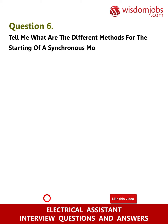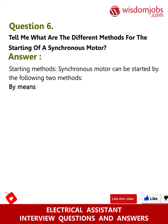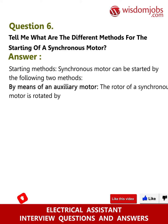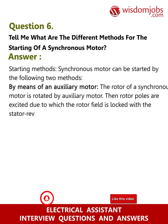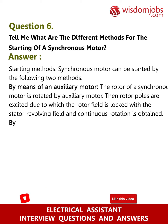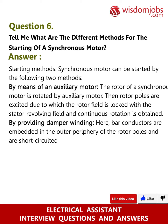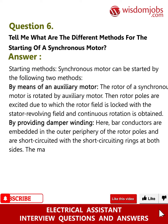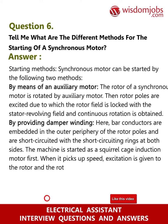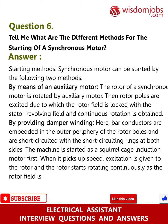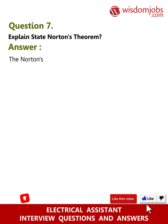Question 6: What are the different methods for starting of a synchronous motor? Answer: Synchronous motors can be started by the following two methods. First, by means of an auxiliary motor: the rotor of a synchronous motor is rotated by an auxiliary motor, then rotor poles are excited, the rotor field locks with the stator revolving field, and continuous rotation is obtained. Second, by providing damper winding: bar conductors are embedded in the outer periphery of the rotor poles and short-circuited with a short-circuiting ring at both sides. The machine is started as a squirrel cage induction motor first, and when it picks up speed, excitation is given to the rotor, which then rotates continuously as the rotor field locks with the stator revolving field.